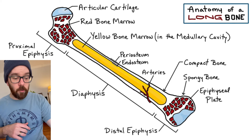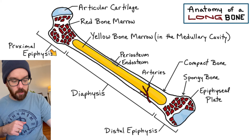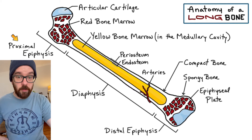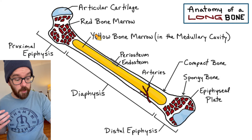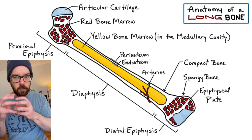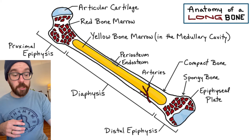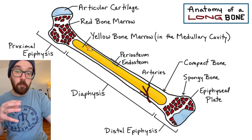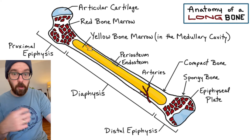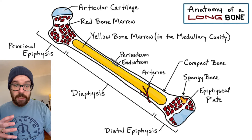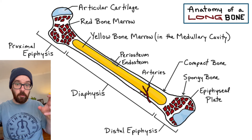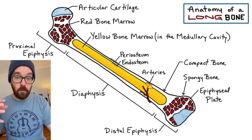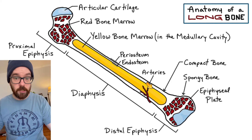Let's do a quick recap. A long bone has three parts: the proximal epiphysis, the diaphysis, and the distal epiphysis. Articular cartilage on both ends reduces friction to prevent osteoarthritis. Red bone marrow makes blood cells — both red and white. Yellow bone marrow stores fat, but can revert to red bone marrow during intense blood loss to produce more blood cells quickly. Epiphyseal plates are where bone growth occurs so bones can grow longer. The periosteum and endosteum allow bones to grow thicker and stronger, and arteries run throughout to transport oxygen and nutrients.